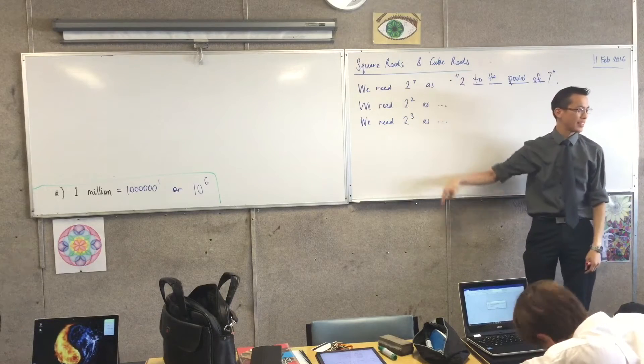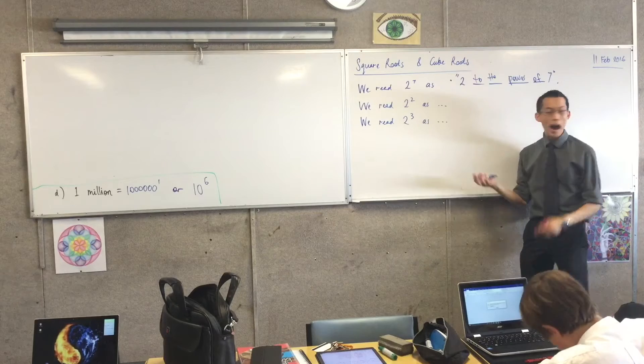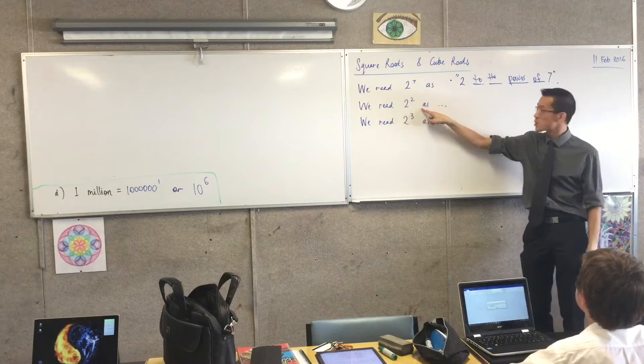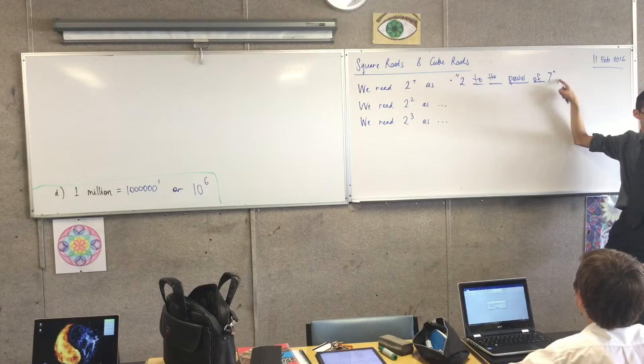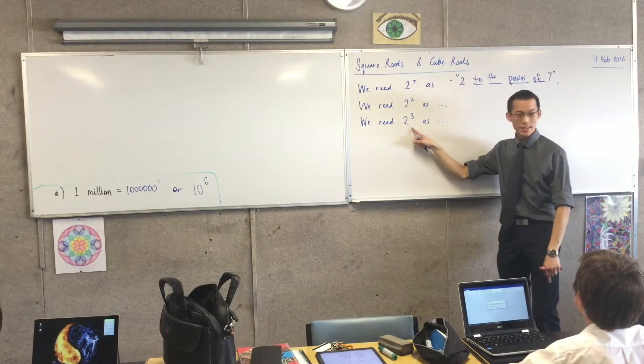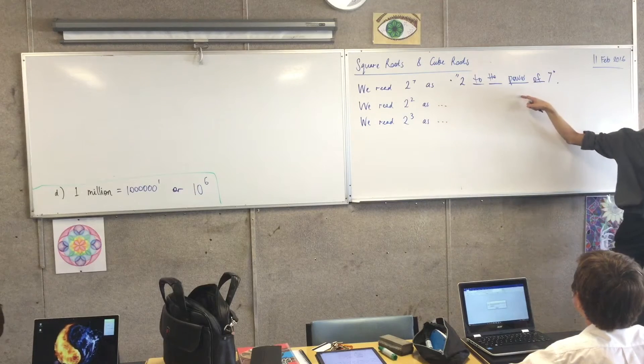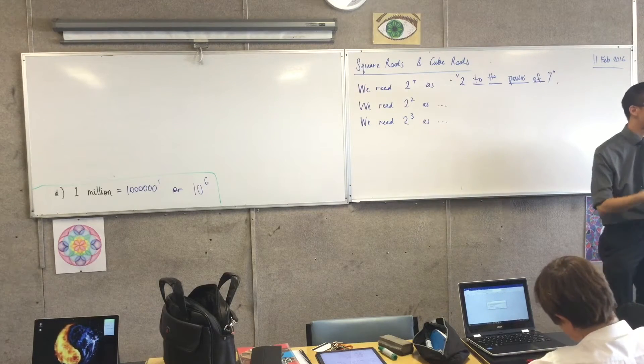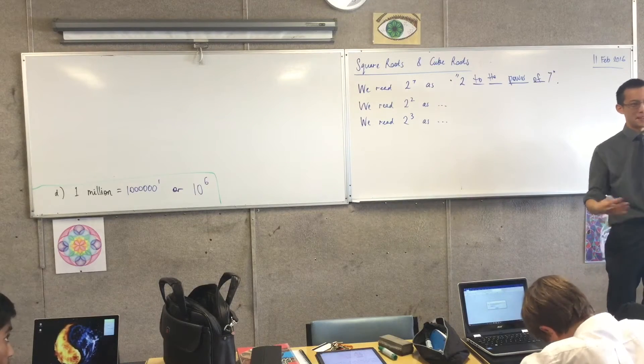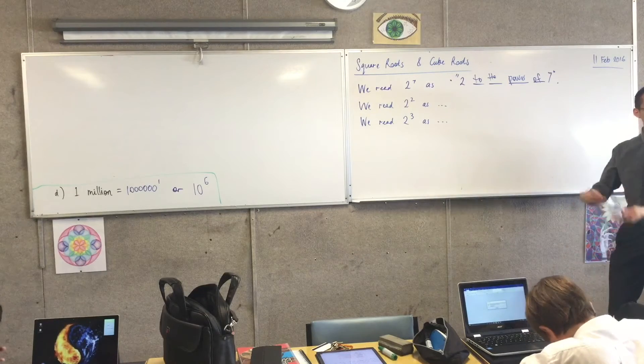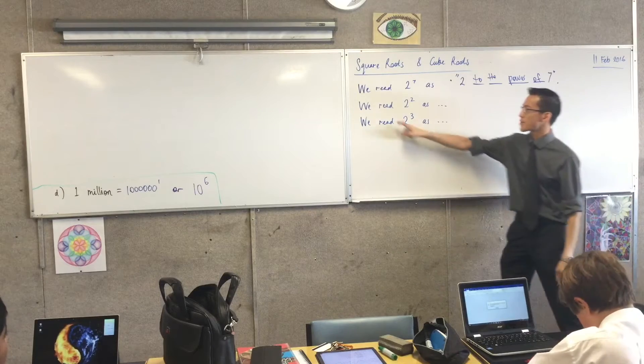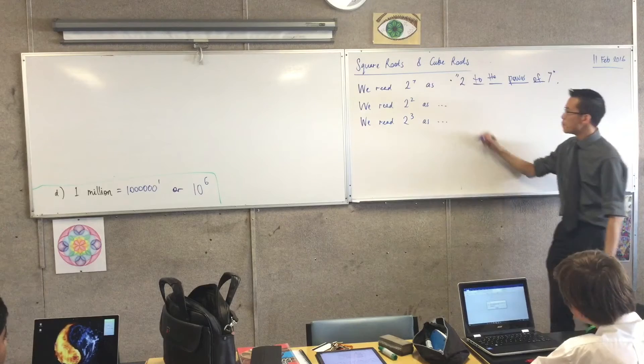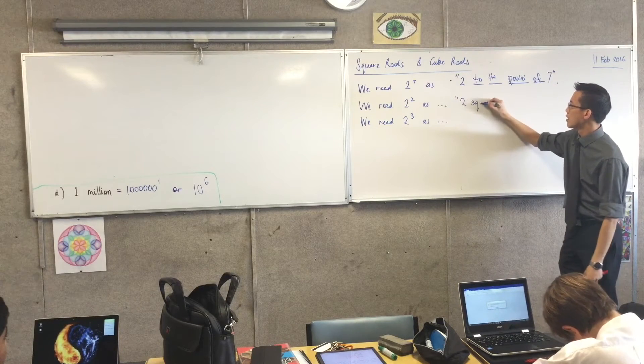Now, I've got a bit of a pattern happening here, right? You can probably guess I could finish off these sentences by saying we read this as two to the power of two, and we read this as two to the power of three, right? And that's perfectly fine, that's accurate. But, there's another kind of shorter, briefer way of saying this. Remember, mathematicians love shorter, briefer ways of doing things. So, I'm going to give this to you in another way. You might have heard of this phrase before. We read this not just as two to the power of two, but we also read it as two squared.